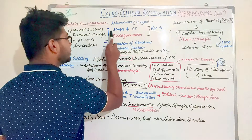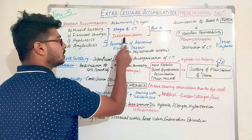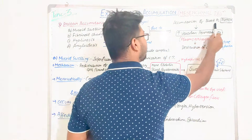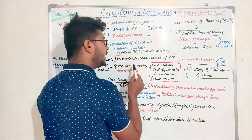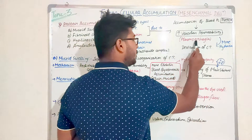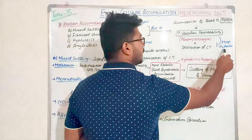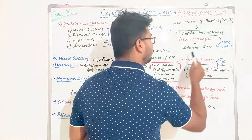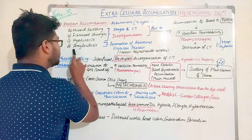Mucoid swelling, fibrinoid changes, and hyalinosis are the stages of connective tissue disorganization. The connective tissue will disorient because of accumulation of blood plasma proteins. When blood plasma proteins are present in the connective tissue, it increases vascular permeability — known as plasmorrhagia — and this increases the hydration quantity inside the connective tissue.